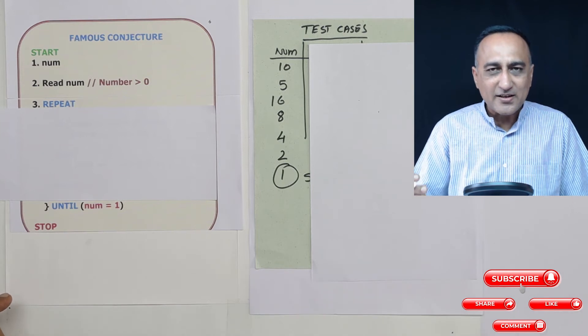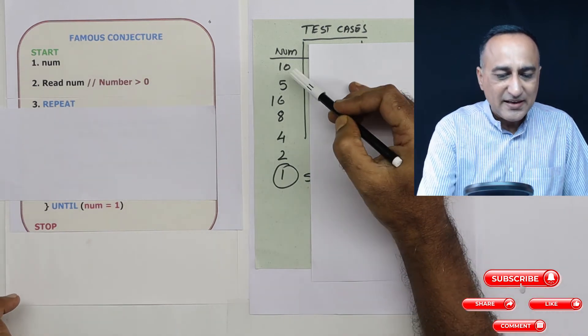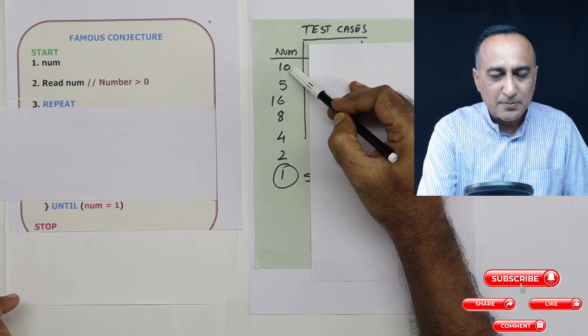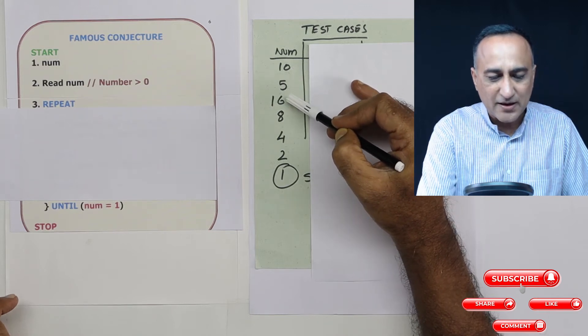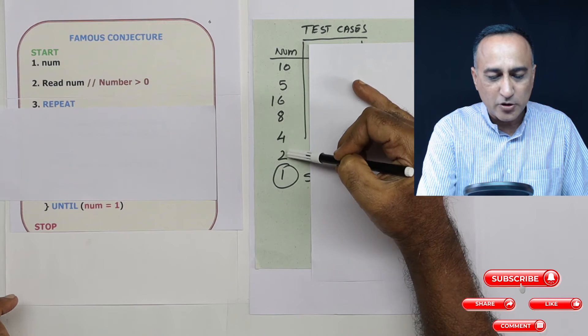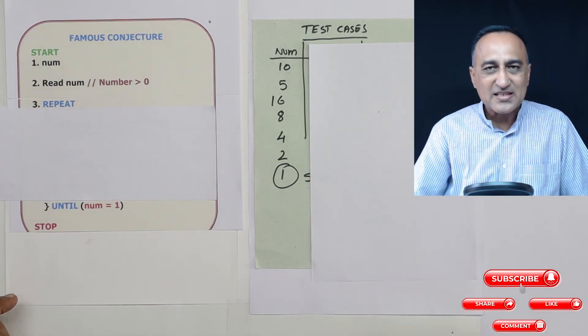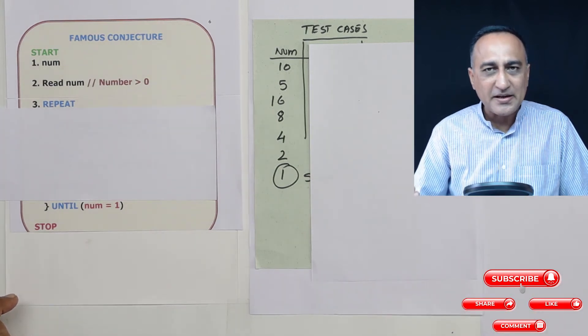This problem is a little different from the other ones in the sense it asks you to print this number every time. It asks you to print 10, it asks you to print 5, 16, 8, 4, 2 and 1. That means it is asking you to print the intermediate steps.